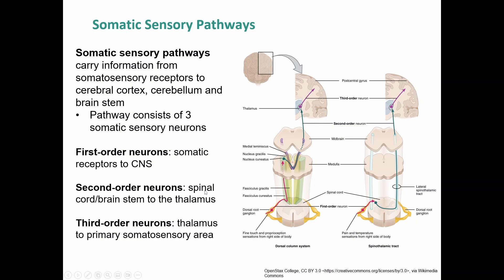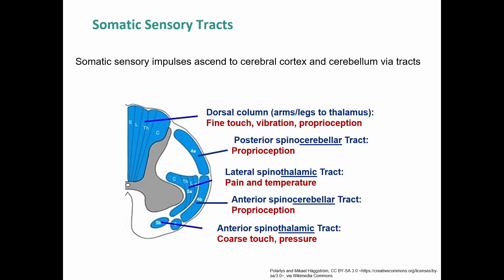The third-order neuron is the last in the chain, going from the thalamus to the primary somatosensory area, which is just behind the central sulcus that divides the parietal from the frontal lobes — essentially the most anterior part of the parietal lobe. Looking at the tracts that run through the spinal cord carrying information from the stimulus to the brain, we have several key pathways.